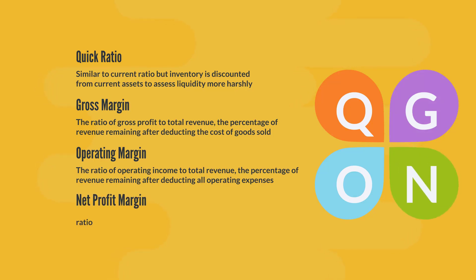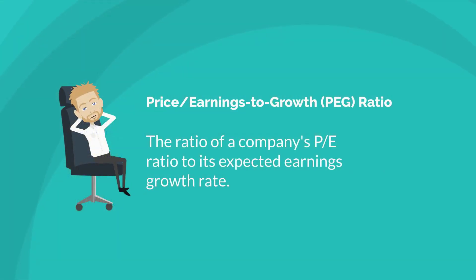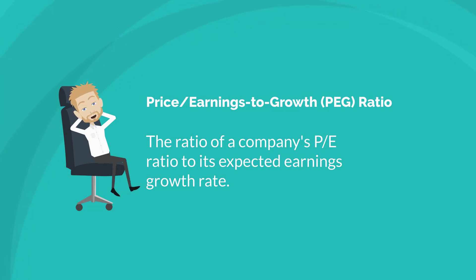Net profit margin: the ratio of net profit to total revenue, expressed as a percentage. Price to earnings to growth ratio, or PEG: the ratio of a company's PE ratio to its expected earnings growth rate.